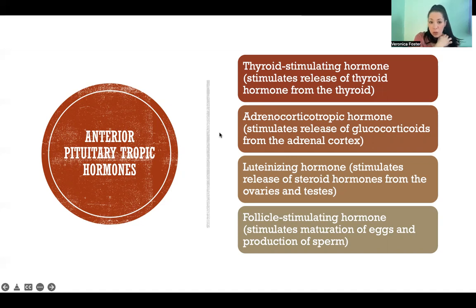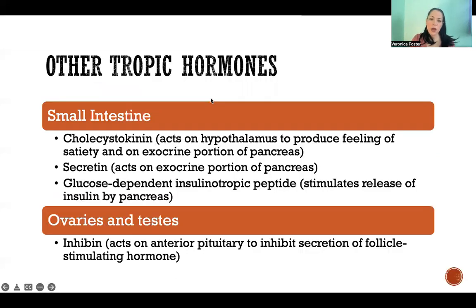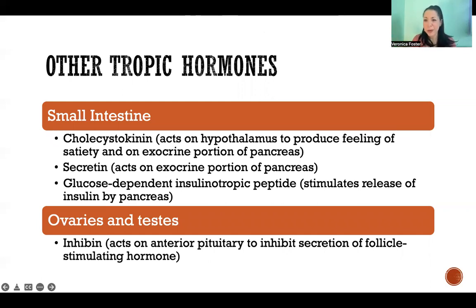Those are the majority of our tropic hormones from the hypothalamus and anterior pituitary, but there are a few others produced in other places in the body. These are the ones I could think of when preparing for this video, but if you think of any others, please tell me in the comments.